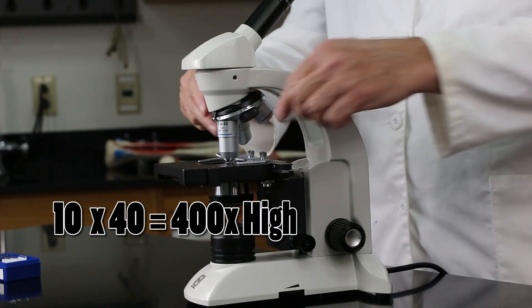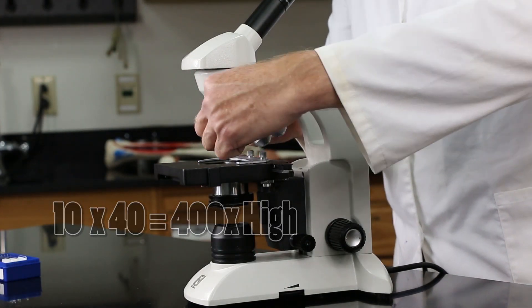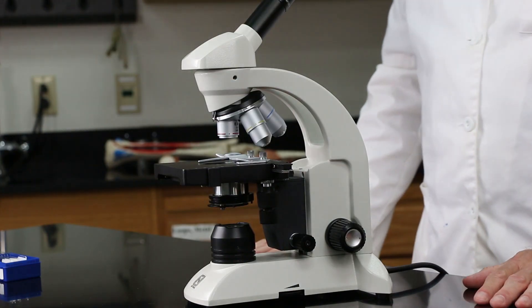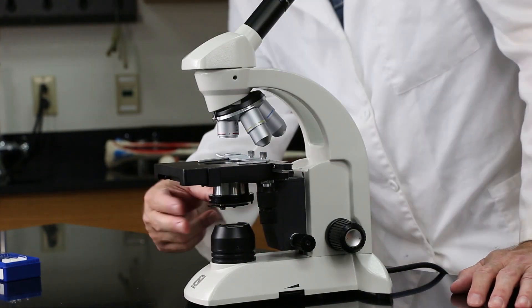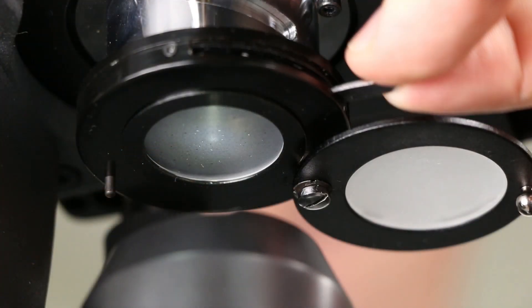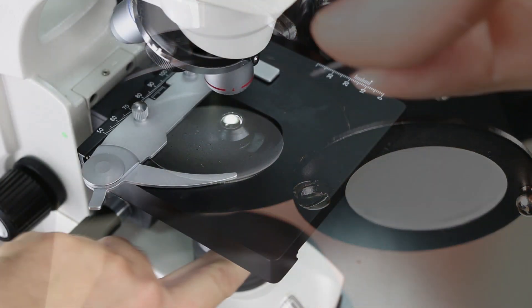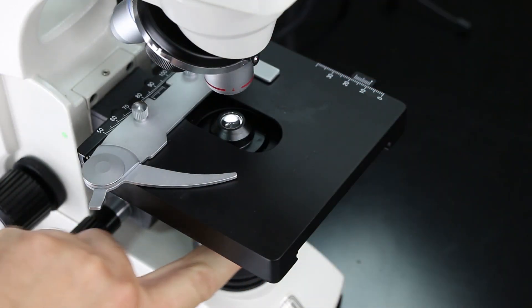Now, I also want to point out a lens that is under the stage, too. And this is a lens that's called the condenser lens, which focuses the light to a point where your object is on the stage.